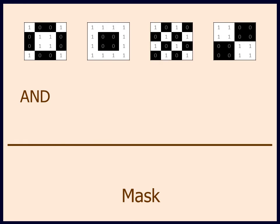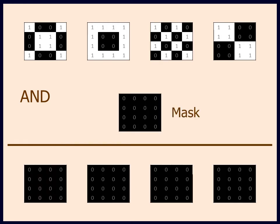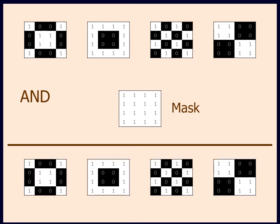For image processing, this function is called a mask. A 0 hides or masks the image, while a 1 shows or unmasks the image.